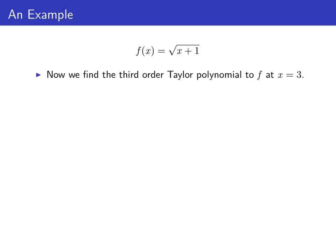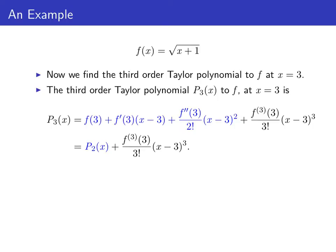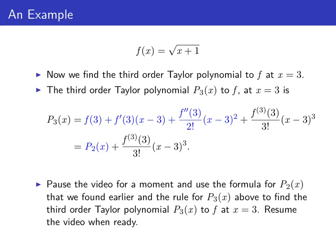Let's find the third order Taylor polynomial to f at x equals three. The third order Taylor polynomial is the second order Taylor polynomial plus the third derivative of f at three divided by three factorial times x minus three cubed — remember these powers of x minus three. We already found p sub two of x, so pause the video and find a formula for p sub three of x centered at x equals three.